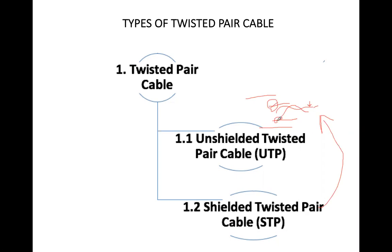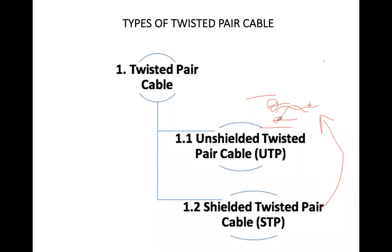The shielded twisted pair cable has an extra layer that makes it stronger and less prone to breaking. Shielded twisted pair cable is used in areas where there are a lot of noise sources. It is also more durable and will not break easily. The benefits of STP are better noise protection and durability; the disadvantage is higher cost.